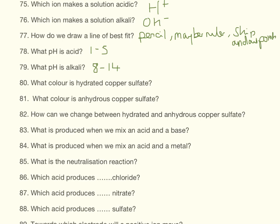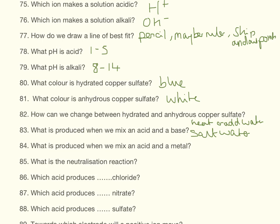What colour is hydrated copper sulphate? That is blue, and the anhydrous one is white. How can we change between the two? We can heat or add water, depending on which way we're going. What is produced when we mix an acid and a base? That is salt and water. And an acid and a metal, that is going to be salt. The neutralisation reaction is an excellent one to learn because it comes up really quite often and you can get quite a lot of marks for that.